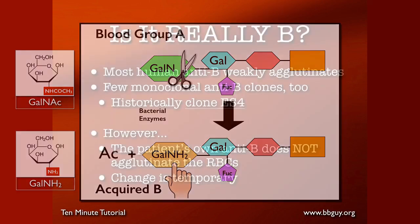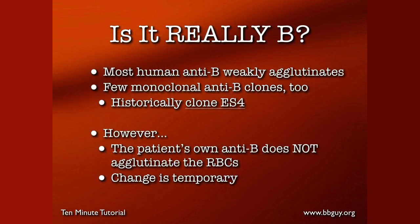Important questions we have to ask about acquired B: is it really B? Well, no, it's not, but it looks like it, because most forms of human anti-B will very weakly agglutinate these acquired B cells. That's especially true when the serum is very fresh; the older the serum gets, the less agglutination you have. A few monoclonal anti-Bs will do that as well. Historically, there was one particular clone that was widely used called ES4. The ES4 clone at body pH would agglutinate acquired B cells wonderfully, so much so that it caused some problems we'll talk about later. However, we know it really is not an actual B because the patient's own anti-B — remember this is a blood group A person with a strong anti-B — will not agglutinate those acquired B cells.